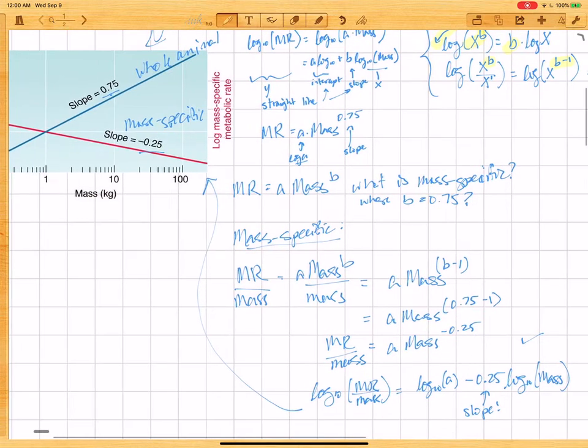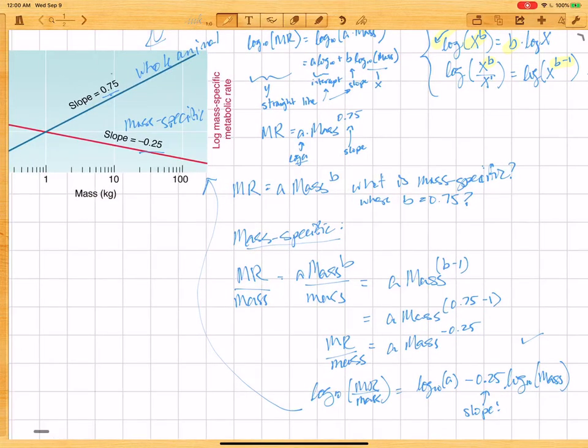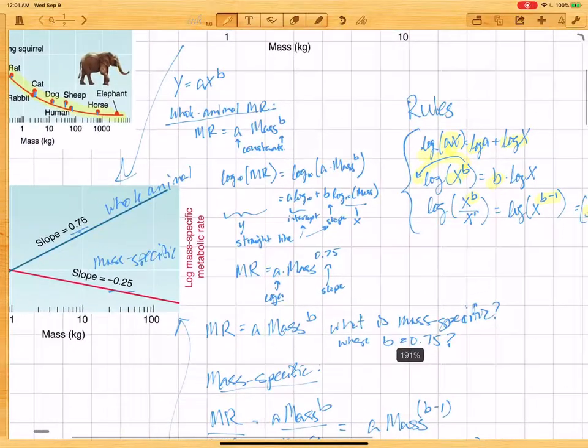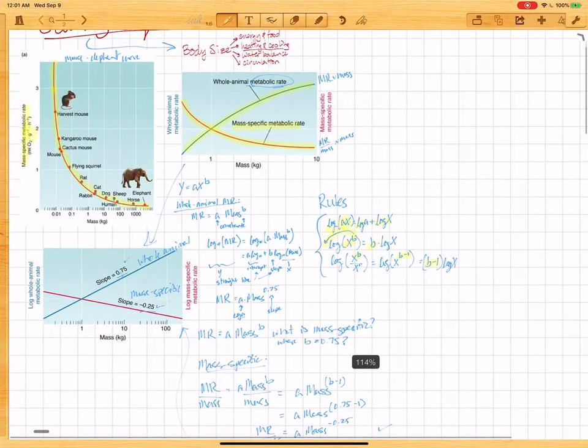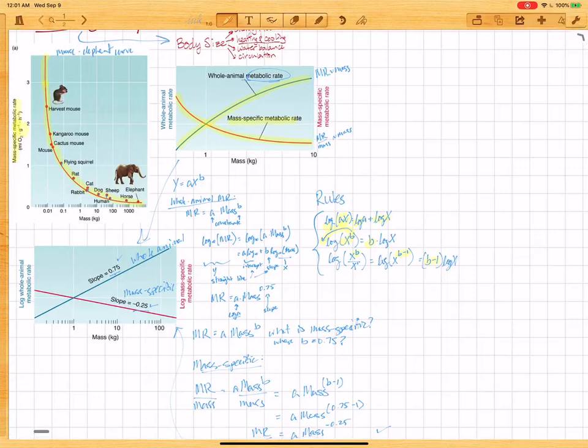Okay so we understand now that we can have a whole animal metabolic rate of 0.75 and then the mass-specific metabolic rate becomes minus 0.25, and what does this mean? So this means that as animals get larger it costs more to keep them alive. That makes a lot of sense, right? Elephants eat a lot more than mice. We know that. But pound for pound, larger animals can live a lot more cheaply because bigger animals have lower mass-specific metabolic rate.